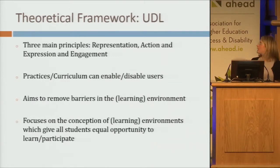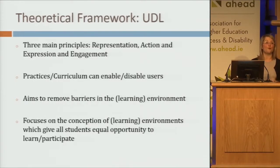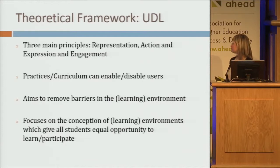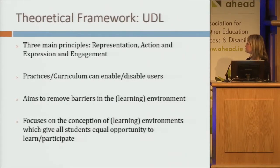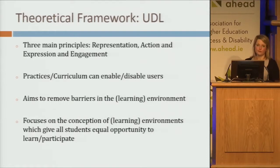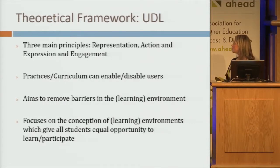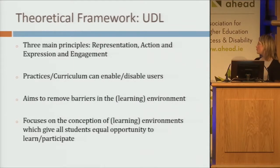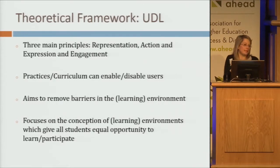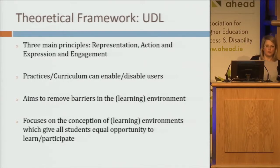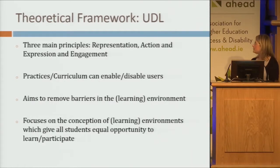Universal Design for Learning has three main principles: multiple means of representation, multiple means of action and expression, and multiple means of engagement — and David Rose really spoke at length to those three principles. It also says that practices or the curriculum can enable or disable users and students, and it aims to remove barriers in the learning environment. We're looking at disability service provision, so it can remove barriers there as well. It focuses on the conception of environments which give all students equal opportunity to learn or to participate — how can we get students into the office so they're no longer afraid of signing up or being connected with our office in any way?